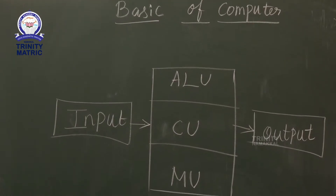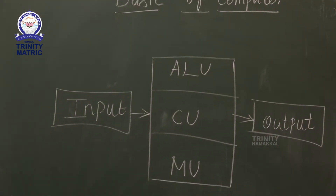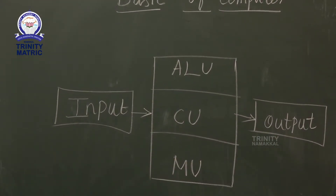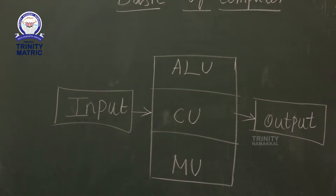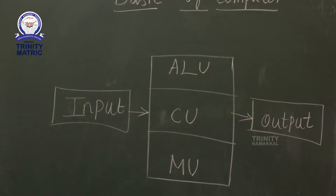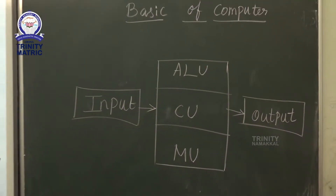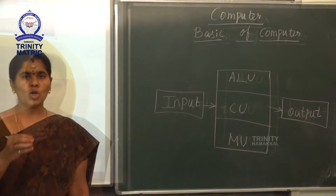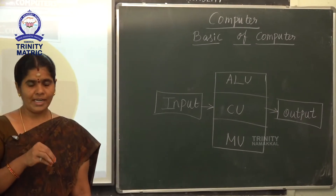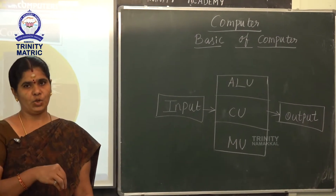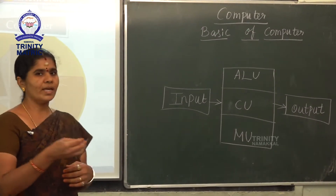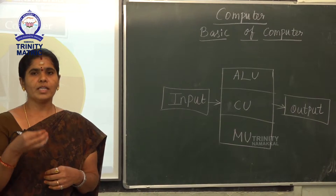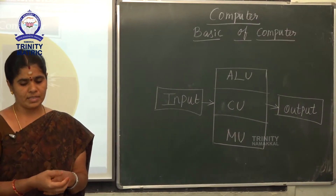The whole computer parts are controlled by the Control Unit. Memory Unit: all the processes done by the computer are stored initially in the memory unit. Finally, we can see the output in the output devices.